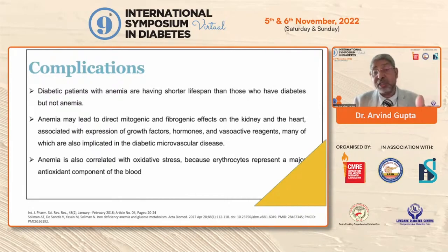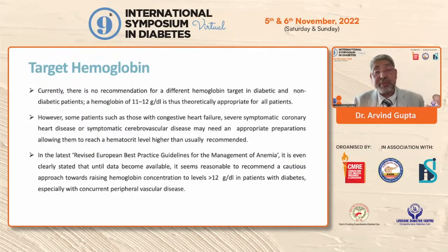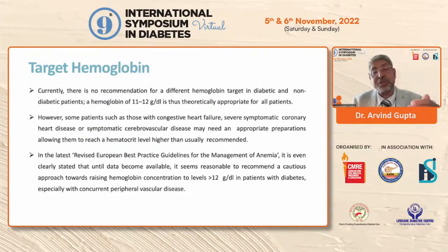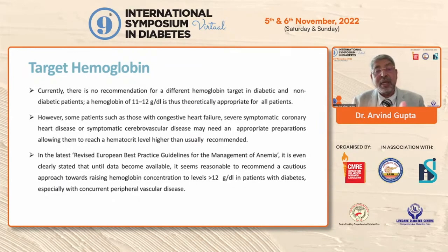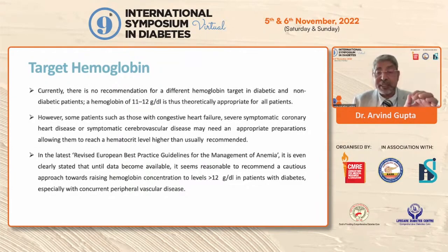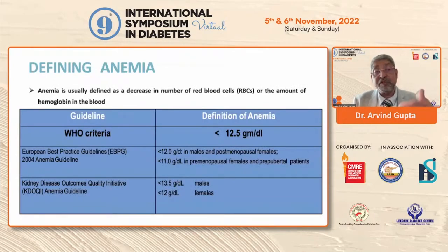Anemia is also correlated with oxidative stress because erythrocytes represent a major antioxidant component of the blood. Regarding target hemoglobin, most guidelines indicate it should be more than 12 grams percent. The revised European Best Practice Guidelines for the management of anemia state that the hemoglobin level should be more than 12 grams in any case. By WHO criteria, hemoglobin should always be more than 12.5 gram percent.